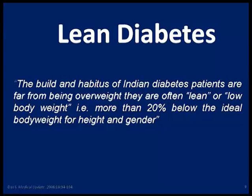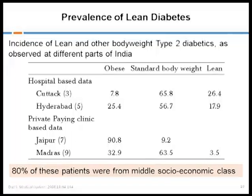These lean diabetic patients are often of low body weight — more than 20 percent below the ideal body weight for their height and gender. Data from nine centers across India showed that the lean population was 26 percent and normal weight 65 percent, while obese were only 7.8 percent. From Kolkata it was 25.4 percent. So the majority of Indian type 2 diabetic patients are lean or normal weight.